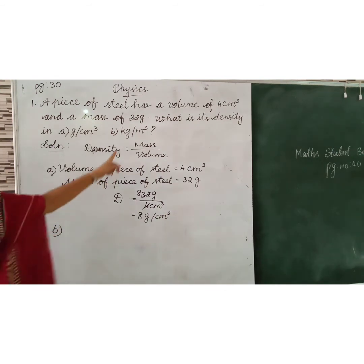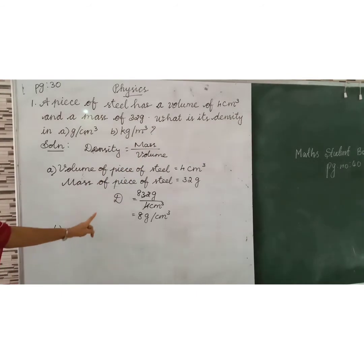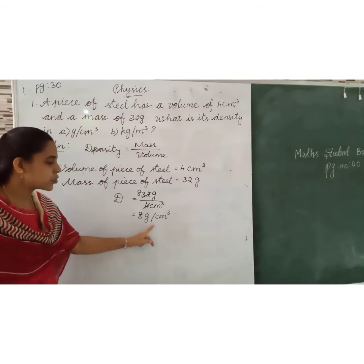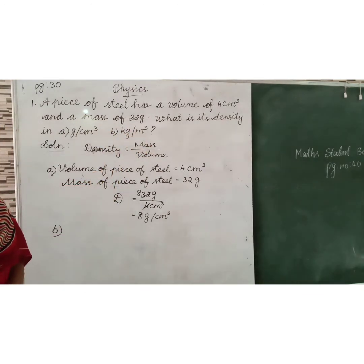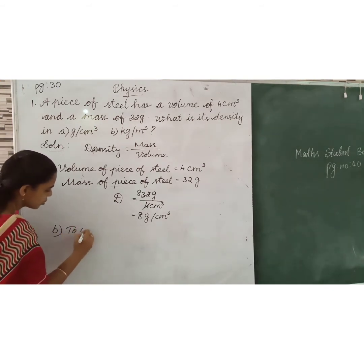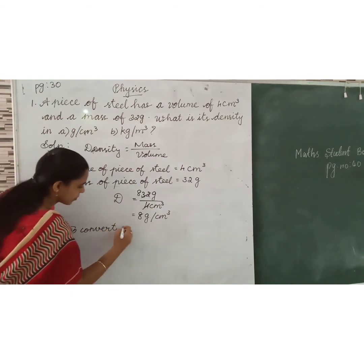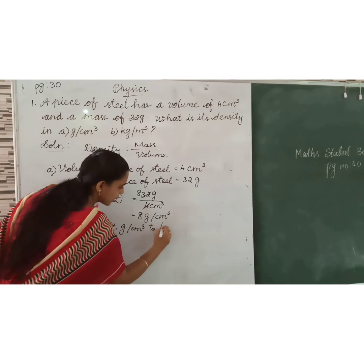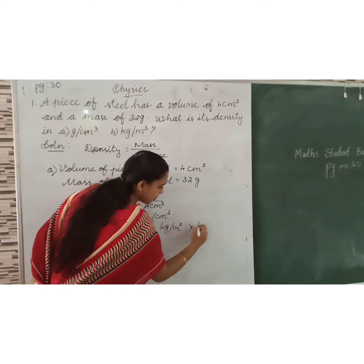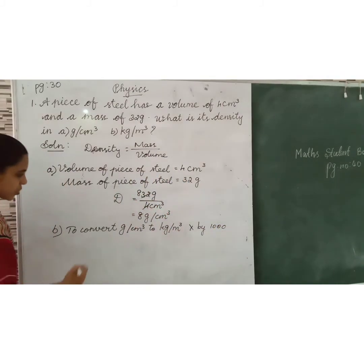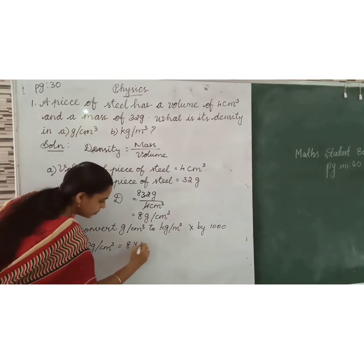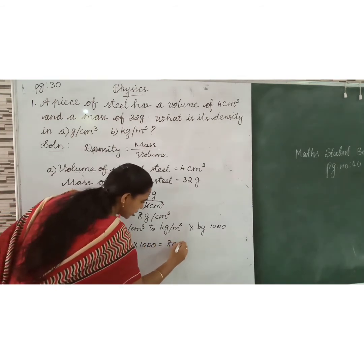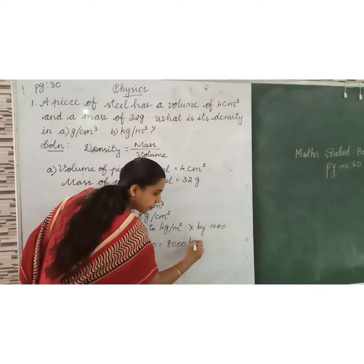For question B, we need the answer in kilogram per meter cube. To convert from gram per centimeter cube to kilogram per meter cube, we multiply by one thousand. So, 8 g/cm³ × 1000 = 8,000 kilogram per meter cube.